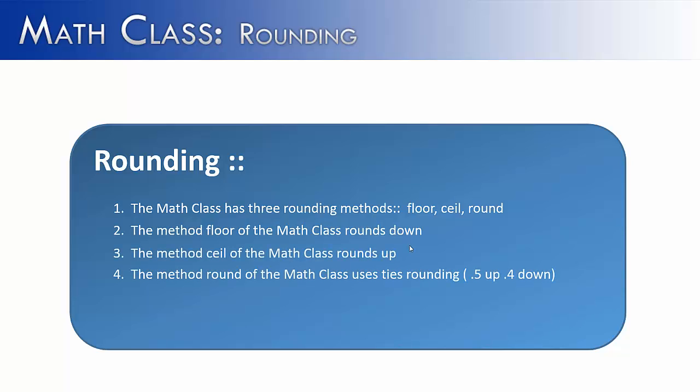Round rounds up at 0.5 and above and down at 0.4 and below. It uses what you would traditionally use in a math class, and that is called ties rounding. As we showed with both floor and ceil, it's important to know what data type is being returned.